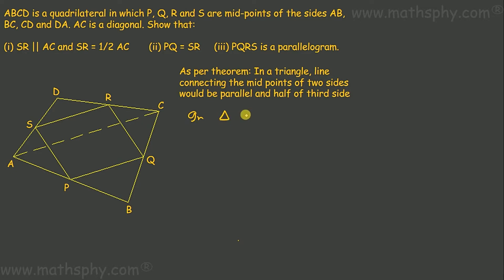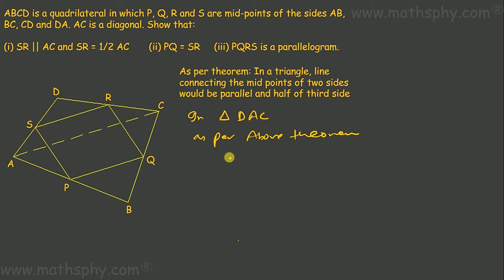In triangle DAC, as per the above theorem, since SR is connecting the midpoints of AD and CD, SR is parallel to AC and SR is equal to half of AC.